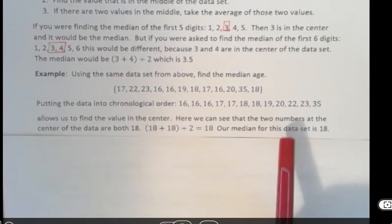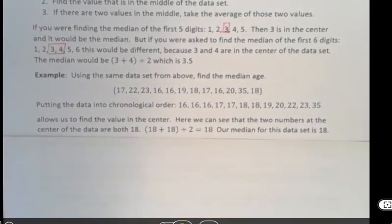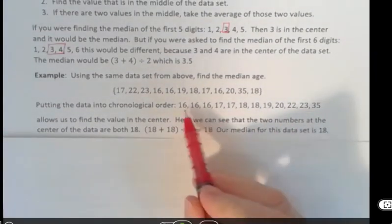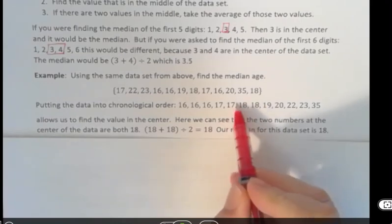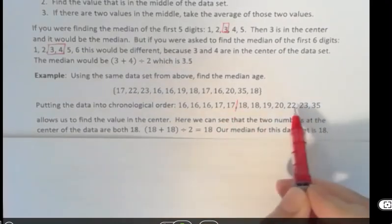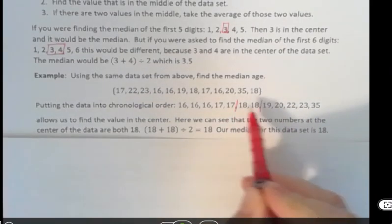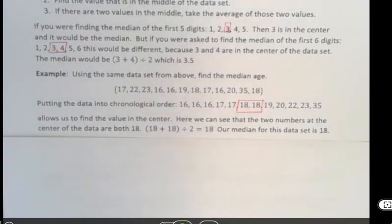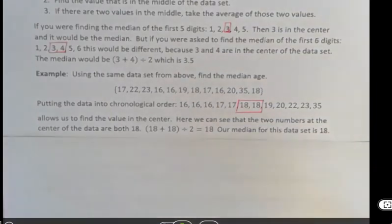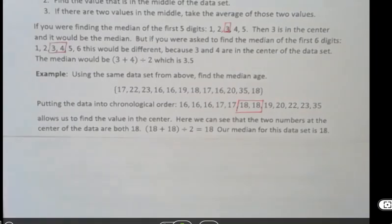Here we can see that the two numbers in the data set—if we have 12 numbers, one, two, three, four, five to the left, and one, two, three, four, five to the right—the two numbers in the center happen to be both 18. And so the average of 18 plus 18 divided by two is still 18. If you add the same thing and divide by two, you're going to get that. So you get 18 for a median.